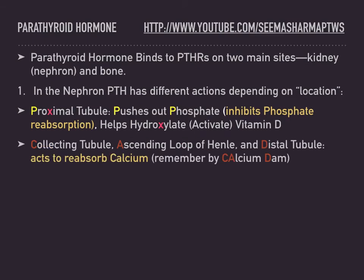The collecting tubule, ascending loop of Henle, and distal tubule make up the second location where PTH acts to reabsorb calcium. This can be remembered as a calcium dam: C stands for collecting tubule, A stands for ascending loop of Henle, and D stands for distal tubule.